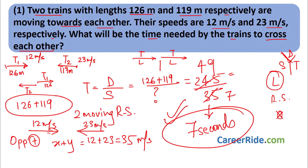See how easy it was. You just need to remember: two moving objects — find relative speed. It is a simple speed, distance, time sum and you need to consider the length of the train in the distance travelled. These concepts will become more and more clear once you solve further sums.